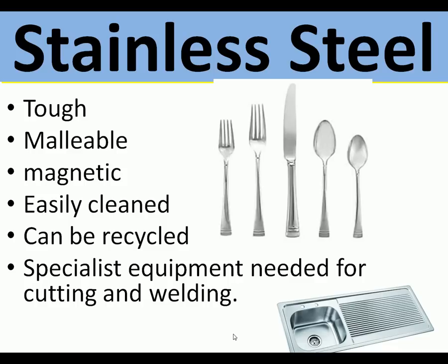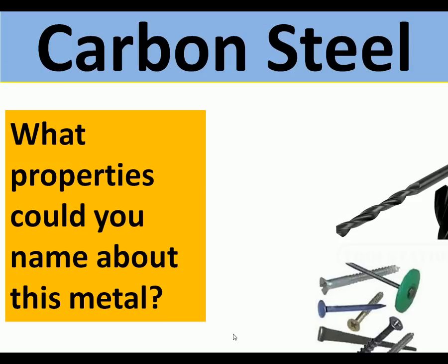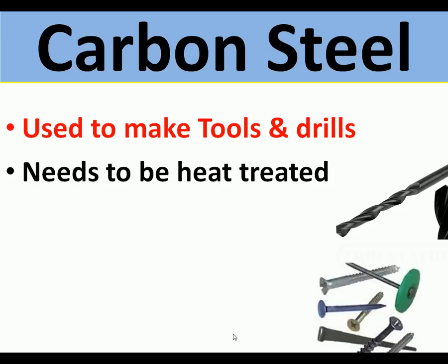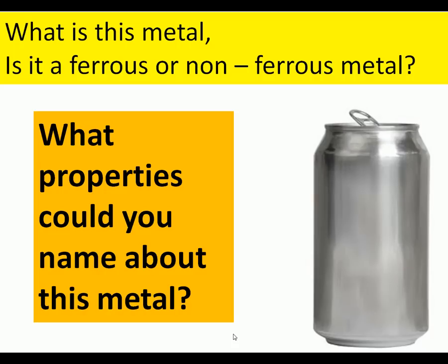Stainless steel is more expensive than mild steel and not generally used in school workshops, as it needs special equipment for drilling, cutting, and welding. High carbon steel is a very tough steel used to make tools, drills, and files. By adding carbon to steel it becomes tougher. It generally needs to be heat treated, can be recycled, and rusts if not protected.